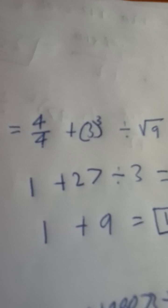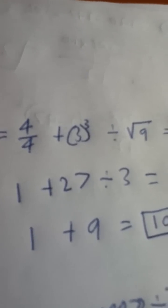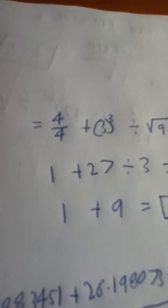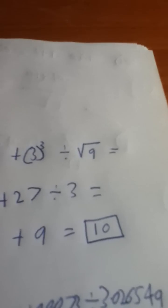And then 4 over 4 would be 1, 3 cubed would be 27 and the square root of 9 is 3. So 27 divided by 3 is 9 so 1 plus 9 equals 10 and that's your final answer.